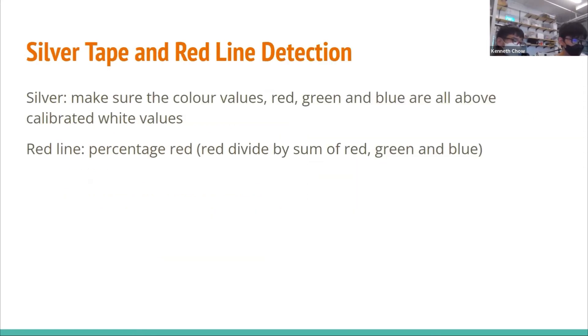The robot senses silver tape when the downward-facing color sensors return values equal to or greater than calibrated white values. The robot also senses the red line when it senses percentage red, which is the red value divided by the sum of the red, green, and blue readings.